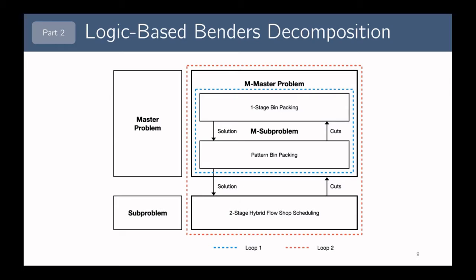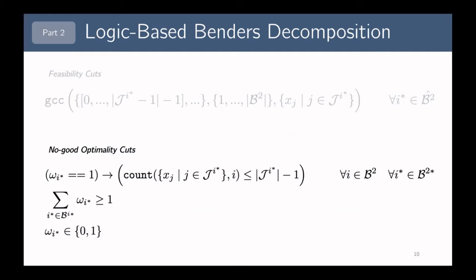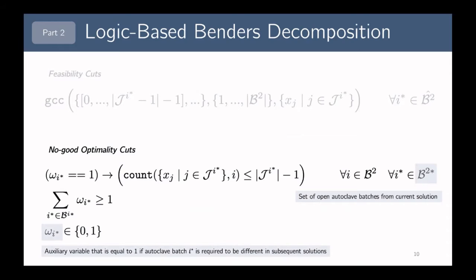After solving the sub-problem, we have a full solution and want to restart the process. To do so, we add no-good optimality cuts. For each existing autoclave batch in the current solution, we introduce an auxiliary variable called Omega. Setting Omega equal to one enforces that the autoclave batch must differ in subsequent solutions by preventing a set of jobs from appearing again. We ensure at least one Omega equals one to remove the current solution and its symmetrical solutions from the search space.